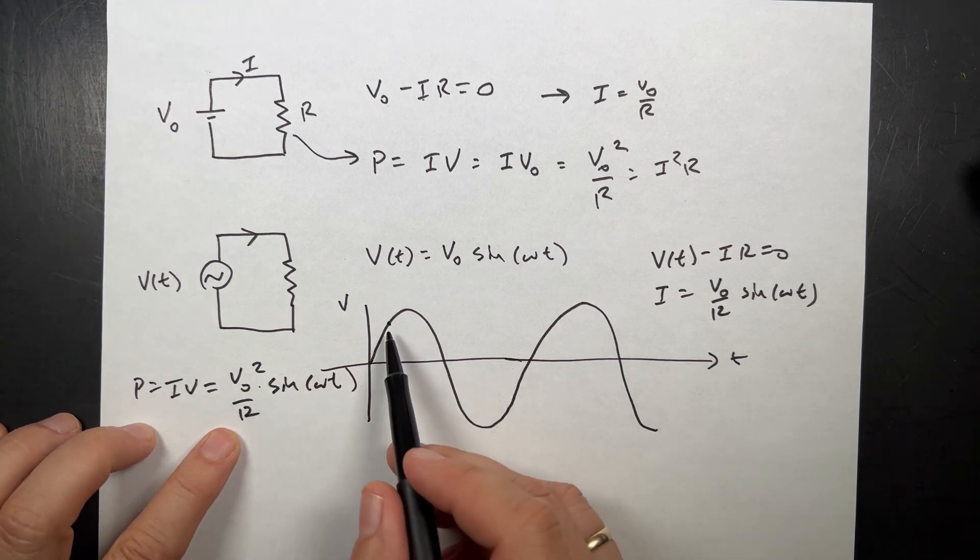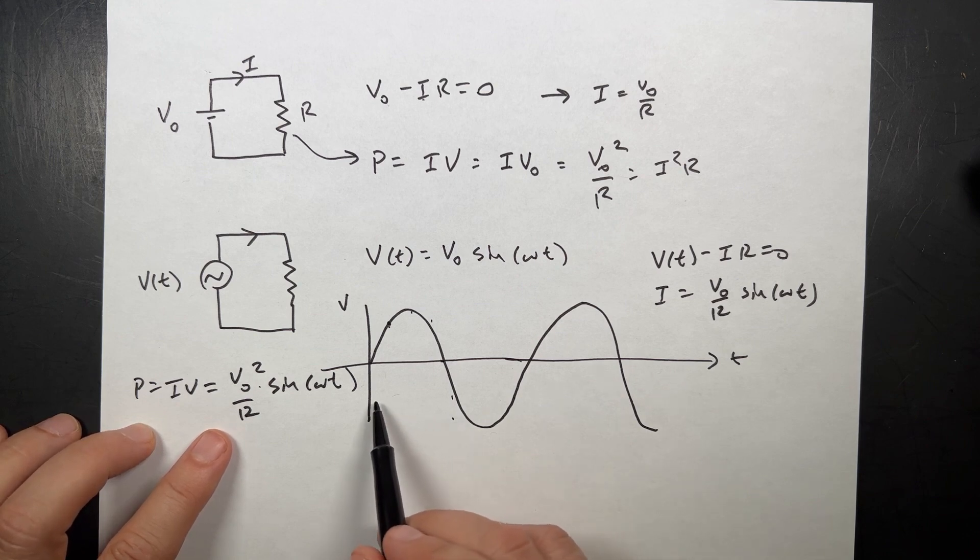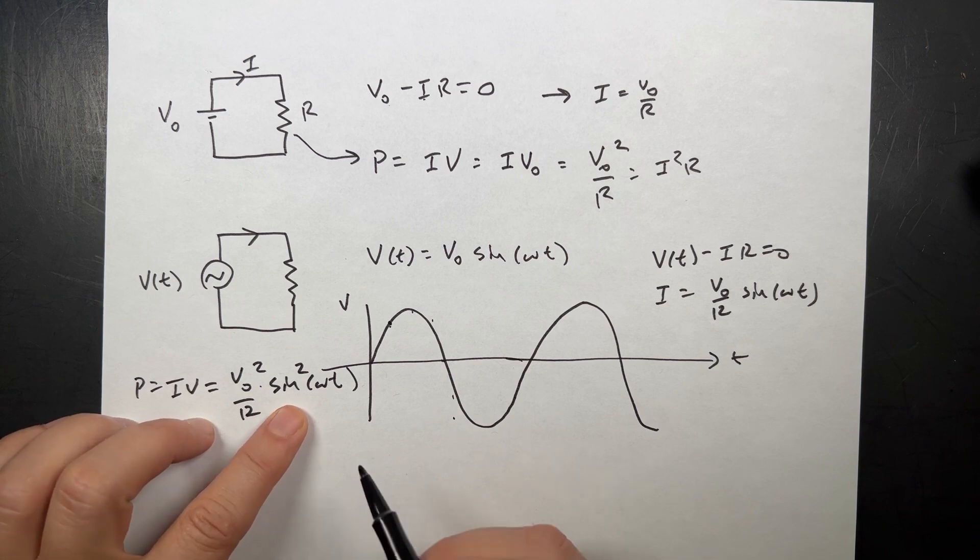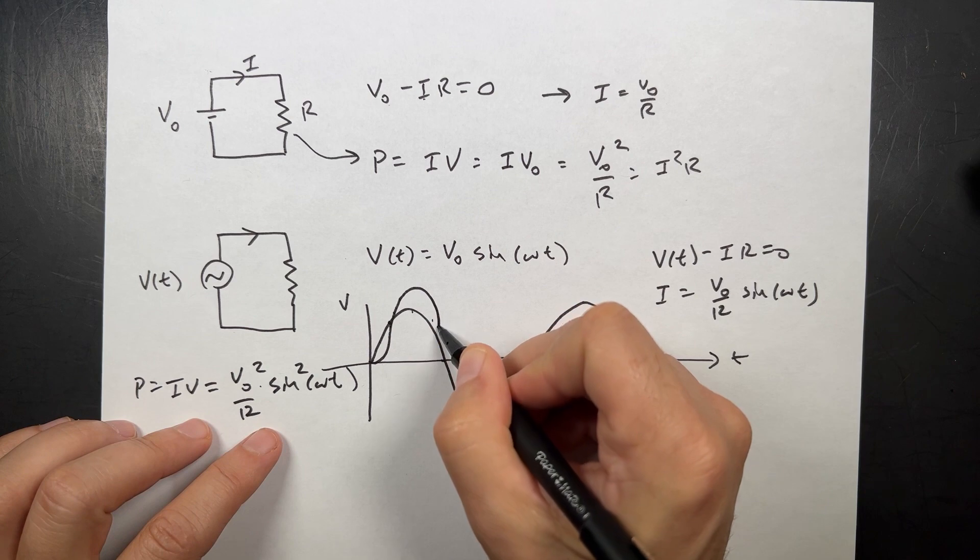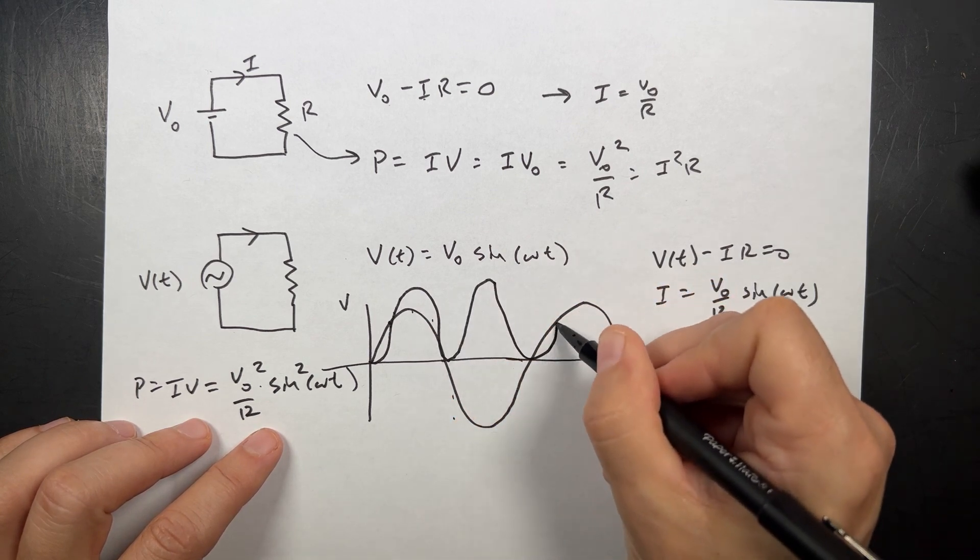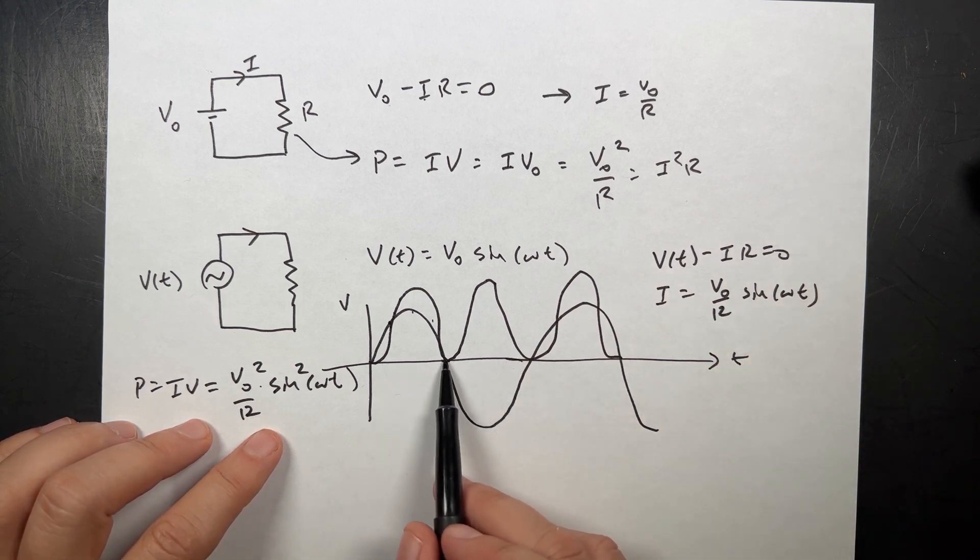Now, that's the power at any given instant. But what about the power rating? I want the average. And so here, this is sine squared. So here, if you square the sine omega T, it looks like this. I'm going to draw it like that.